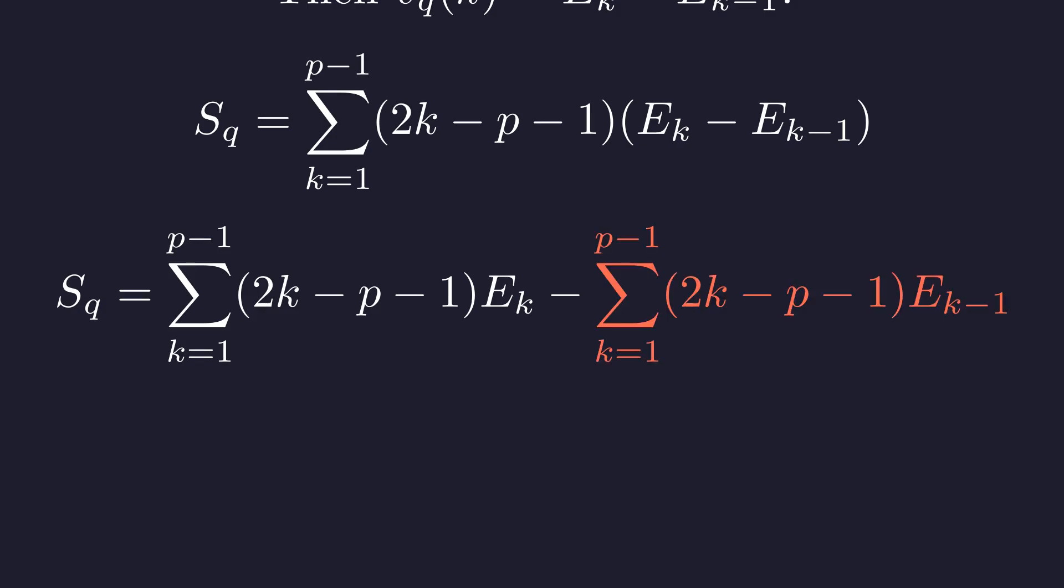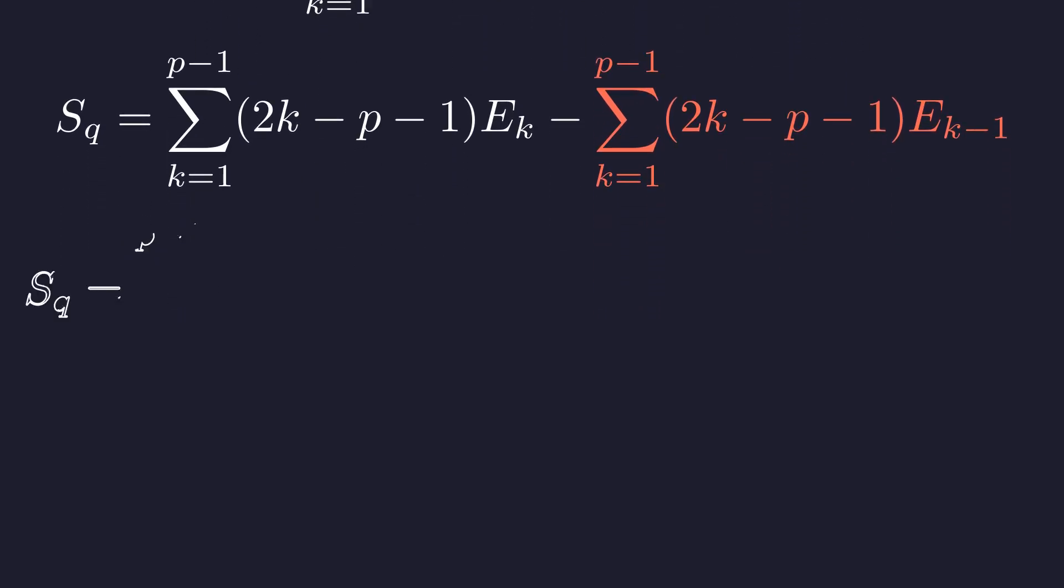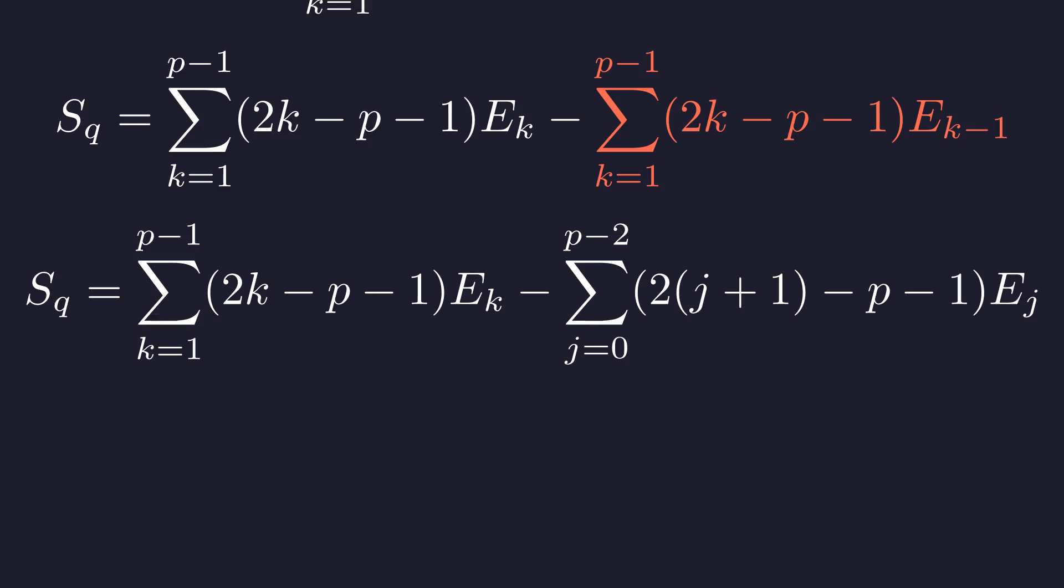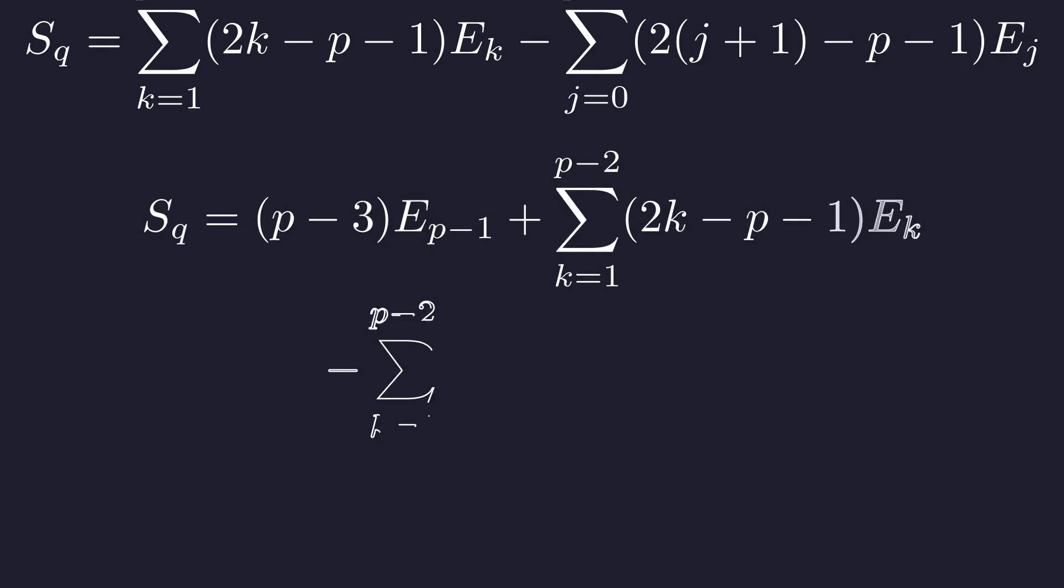Here's the key move: to combine these sums, I need the indices on the E terms to line up, so let me re-index this second sum by substituting j equals k minus 1. The second sum now runs from 0 up to p minus 2. Perfect! Now I can start combining these sums. The E_0 term vanishes since 0 factorial is 1, and I'll pull out the boundary term from the first sum.